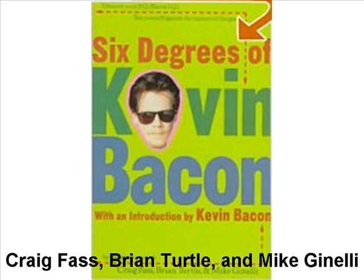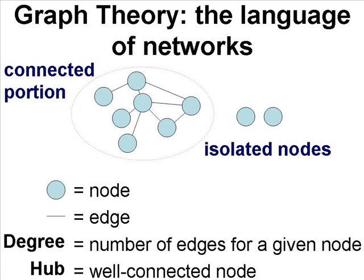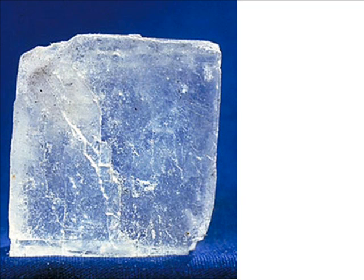To describe networks, we use the language of graph theory. Nodes can represent individuals, actors, neurons, proteins, or anything else in the physical world. The connections between the nodes are called edges. These connections may represent acquaintance, co-appearance in a movie, a synapse between two neurons, or a physical interaction between two proteins or between a protein and a DNA sequence. The degree of a node is the number of edges or connections for that node. A hub is a very well-connected node.